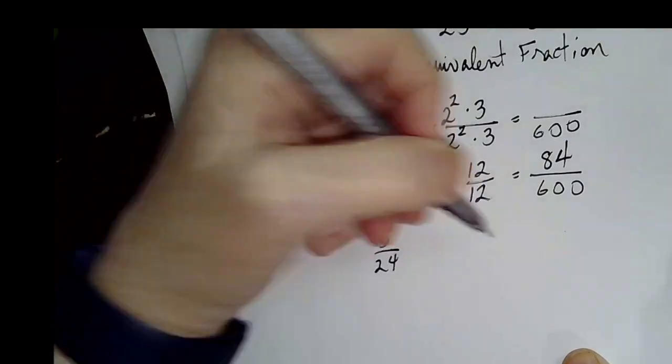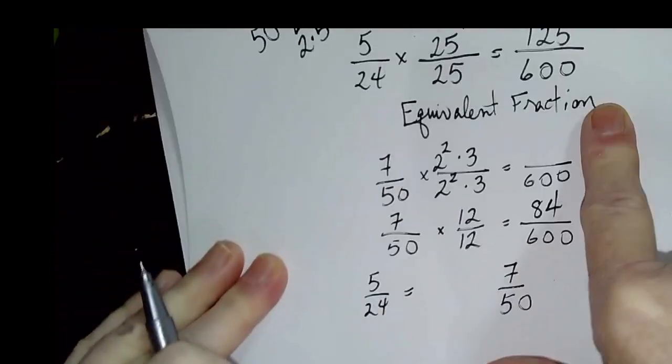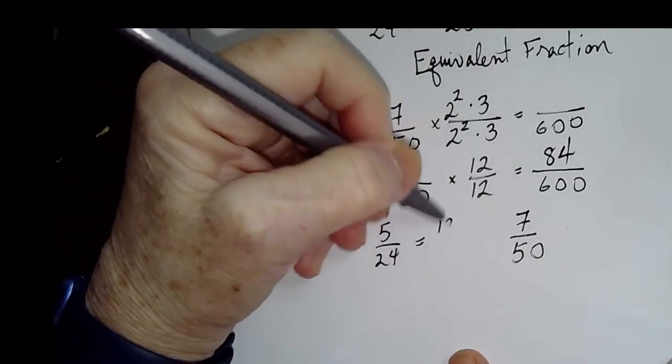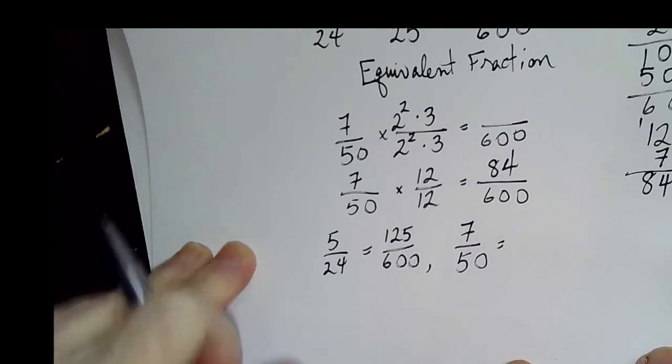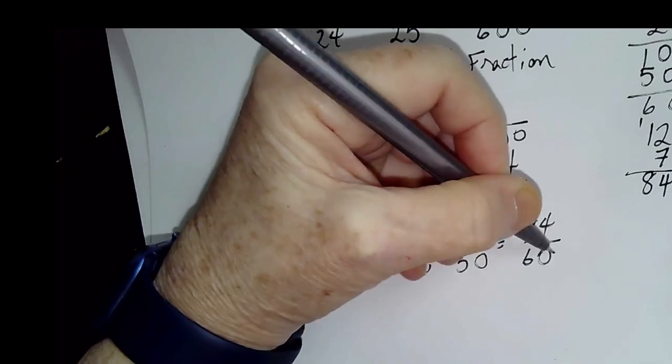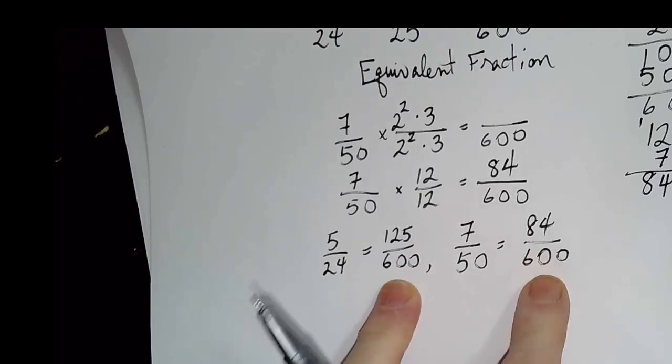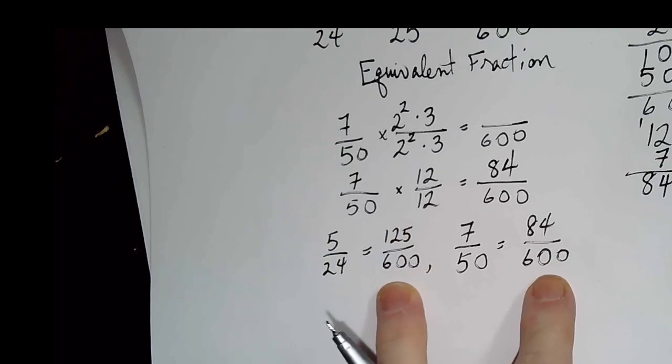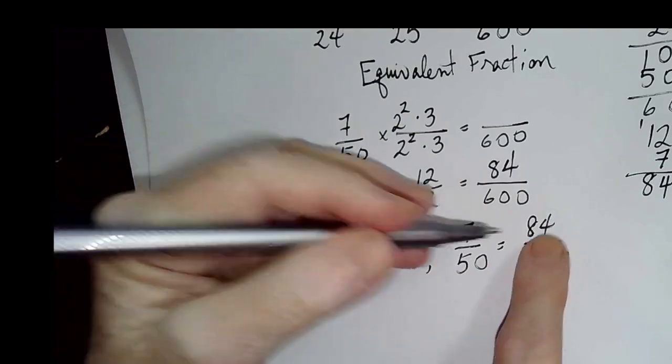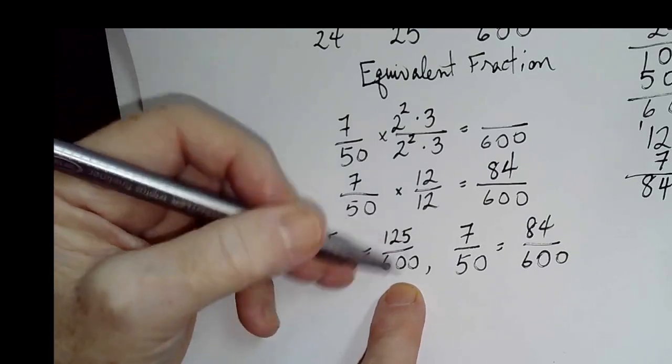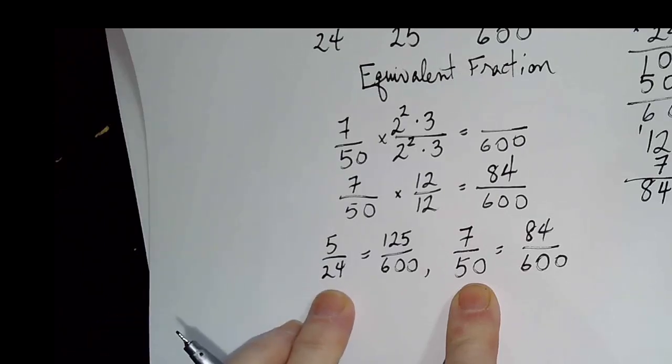And we found that 5 over 24 was 125 over 600, and that 7 over 50 was 84 over 600. So these two fractions, the second two fractions, are equivalent to the originals, but they're nice for us because we can compare them. It's easy to see that there are 125 600s in the first fraction, only 84 600s in the second, so that 125 over 600 is definitely bigger. It would be harder to see which one is bigger if we're just looking at 5 over 24 or 7 over 50.